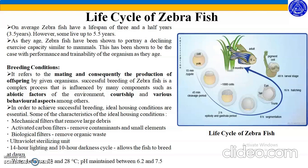Depending on these factors, hatching of some embryos may be delayed. Once hatched, the larva measures about 3 mm in length. Using secretory cells located on the surface of its head, the larva attaches to a hard surface and grows using nutrients from the yolk. In a period of about 3 days, the larva undergoes morphogenesis, characterized by the development of various anatomical structures. By the late larval stage, about 7 days after fertilization, the organism is capable of swimming, moving its jaw, and even feeding on various food material.